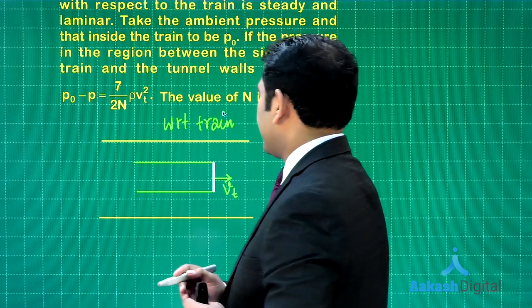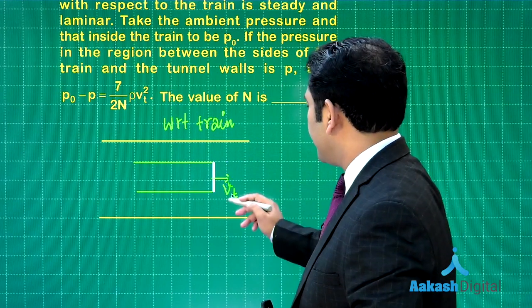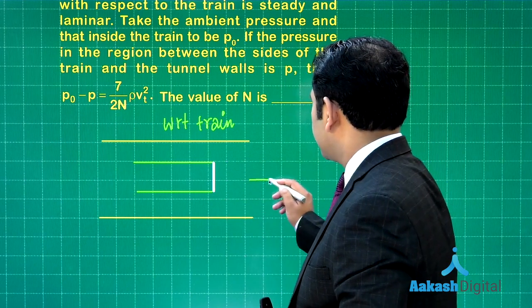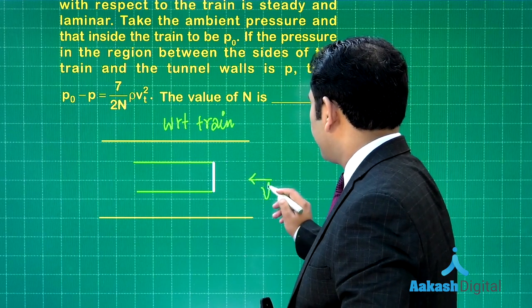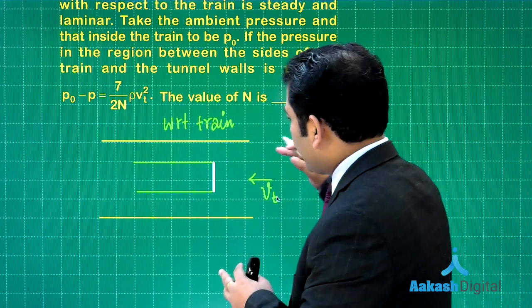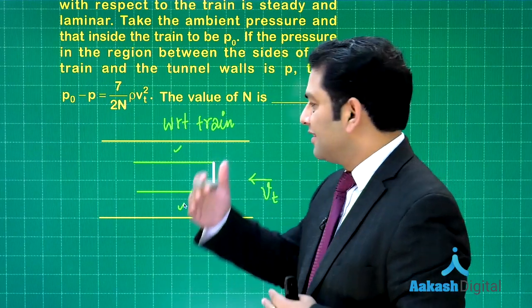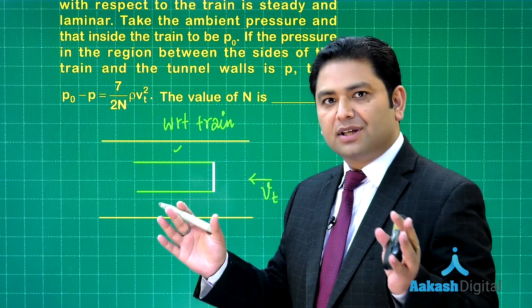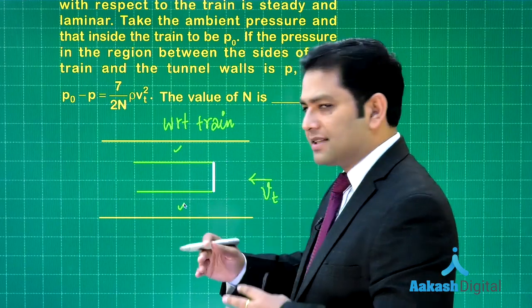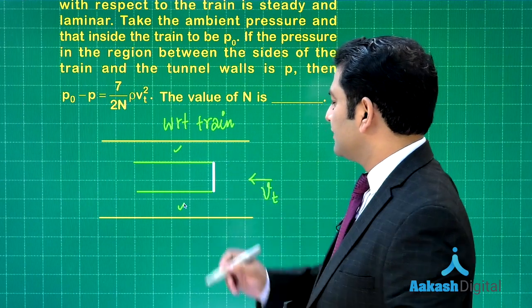The train is moving with speed vt. The cross section of the train is A while that of the tunnel is 4A. To simplify the process, let us see the entire situation with respect to the train, and that will make the matter fairly simpler.